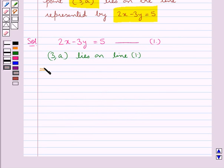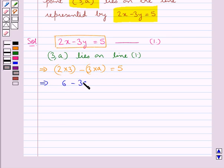So this means we substitute 3 for x and A for y in equation 1. So we have 2 into 3 minus 3 into A is equal to 5. This gives us 6 minus 3A is equal to 5.